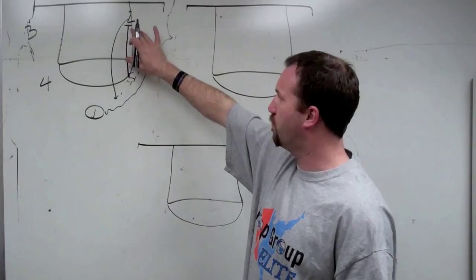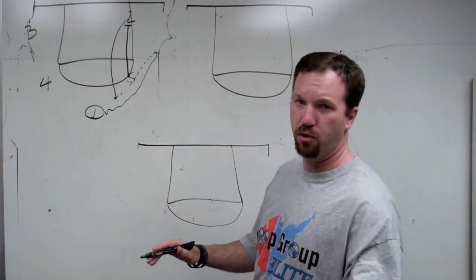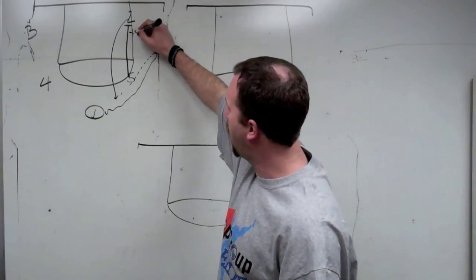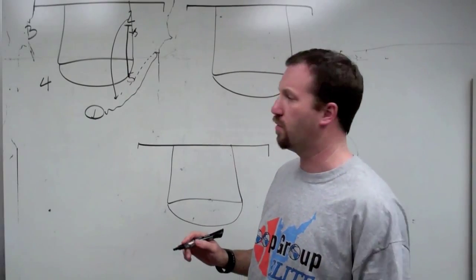After you throw the ball one to two, five is going to look to post hard, probably get pushed off the block. And X-five will be up the line there so they can't throw it in right away.